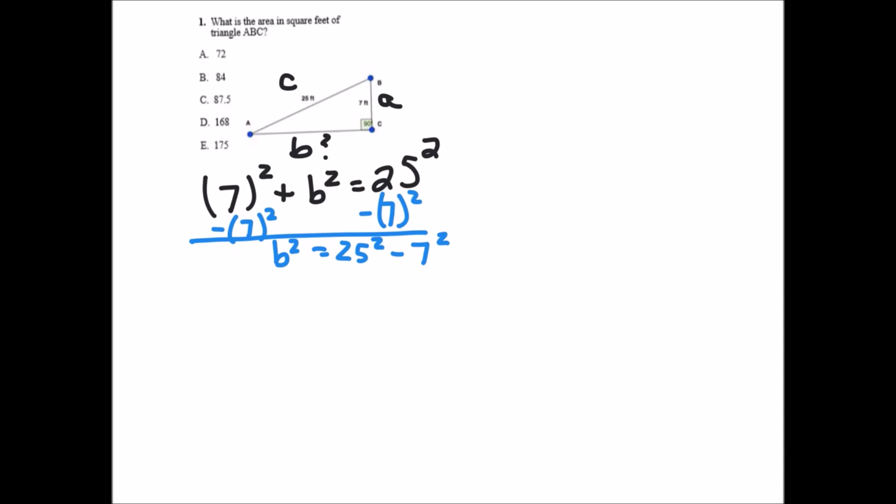Continuing to solve that, we would get B squared equals 625 minus 49, or B squared equals 576. B equals the square root of 576. Use your calculator and you find out that the square root of 576 is 24.